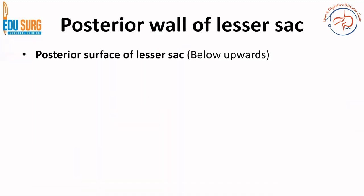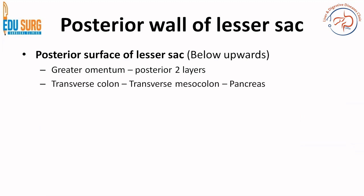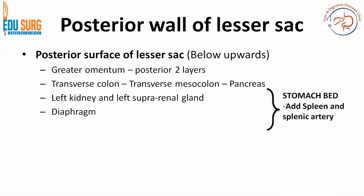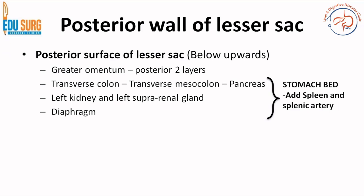Going anatomically, the posterior wall of the lesser sac is formed by structures the stomach rests on from below upwards. The posterior two layers of the greater omentum are posterior to the lesser sac — they go through the colon and attach towards the pancreas. So: transverse colon, transverse mesocolon, and pancreas — this is how the layer goes.